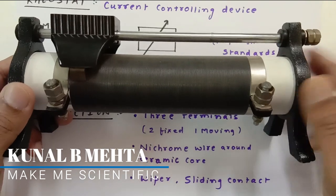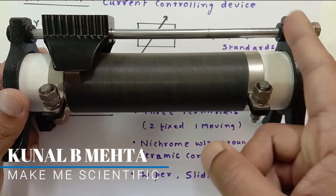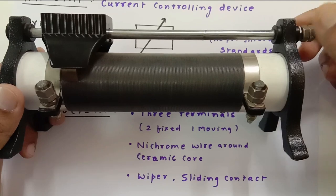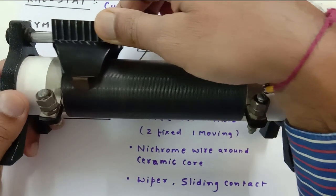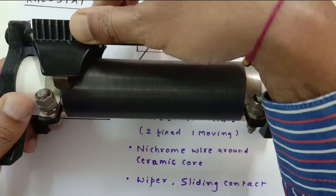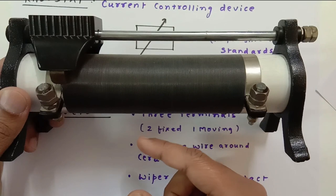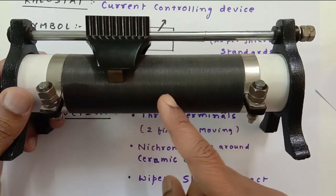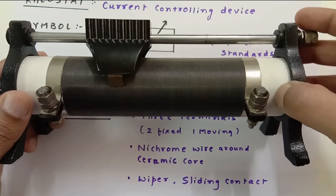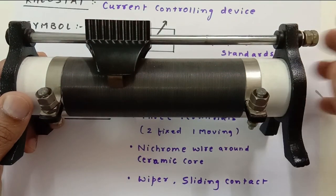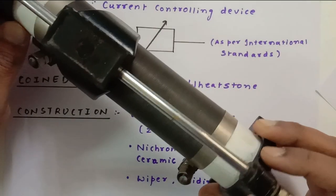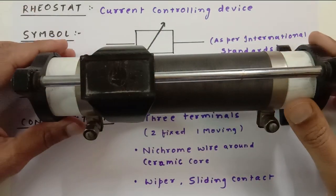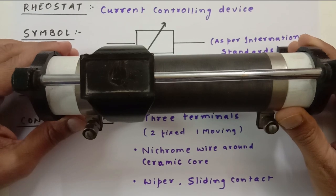It has three terminals: terminal number one, terminal number two, and terminal number three. These two are fixed terminals, whereas this one is called the moving terminal or sliding contact — it can move along the device. It is also sometimes called a wiper, and in some ICSC textbooks it is mentioned as a joki. You can see that the wires are wound over a ceramic material, and this slider moves over a metal rod.